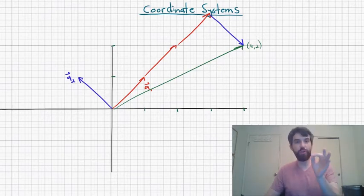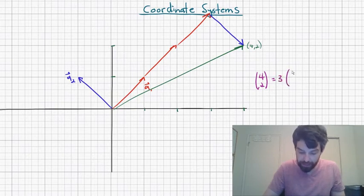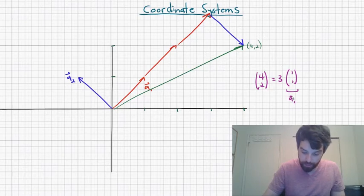And in particular, the relationship of this 3 and this minus 1 is that the point 4, 2, that vector, well, it is written as three times the vector 1, 1, which you'll recall is our A1.